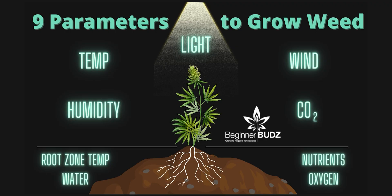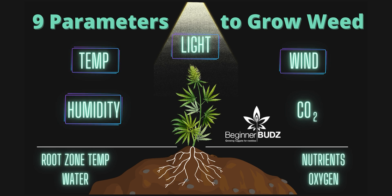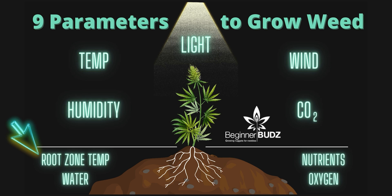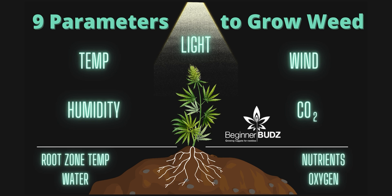First, you have to have everything else on point, which can be broken down into what Dr. Bruce Bugbee over at Apogee refers to as the nine parameters. Essentially, the lights, temps, humidity, wind, and CO2 levels, along with the root zone temp, nutrients, water, and oxygen in the medium, all have to be ideal to push your plants further. If one is lagging behind or lacking, the plant will be stunted. If you try to push one parameter farther without adjusting the rest to match, this additional input will also stunt the plant.